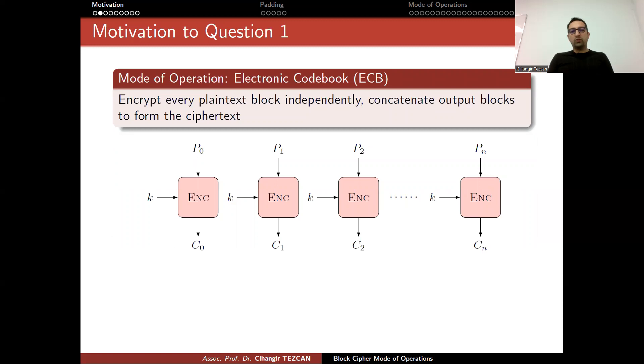Let's look at our motivation for the first question, because a lot of people think that the following is the best thing to do. And this is actually called Electronic Codebook, ECB mode of operation. So it says that encrypt every plaintext block independently, concatenate output blocks to form the ciphertext. This is the first thing that comes to the mind of everybody, and I learned that a lot of people in companies are using this method, but this is the worst thing that you can do.